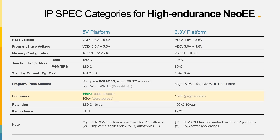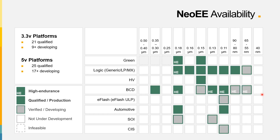Here, we once again collect NeoEe specs for high-endurance solutions on either 5V or 3.3V platforms for requirements in high-temperature or low-power applications. In the map of NeoEe availability, NeoEe has been qualified at 46 platforms for either 3.3V or 5V processes, with 26 more under development. We also marked platforms with high-endurance solutions that are qualified, verified, or under development. If you want any further information, please contact your customer engineer or search on the iService system for details.